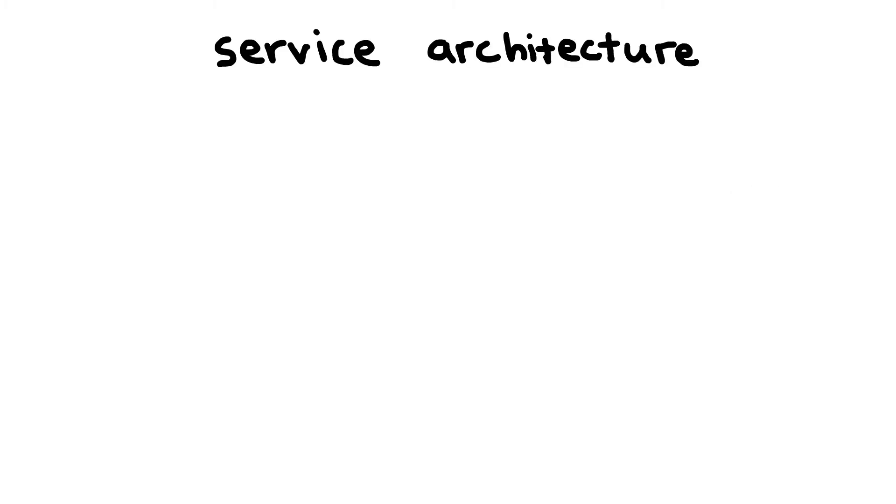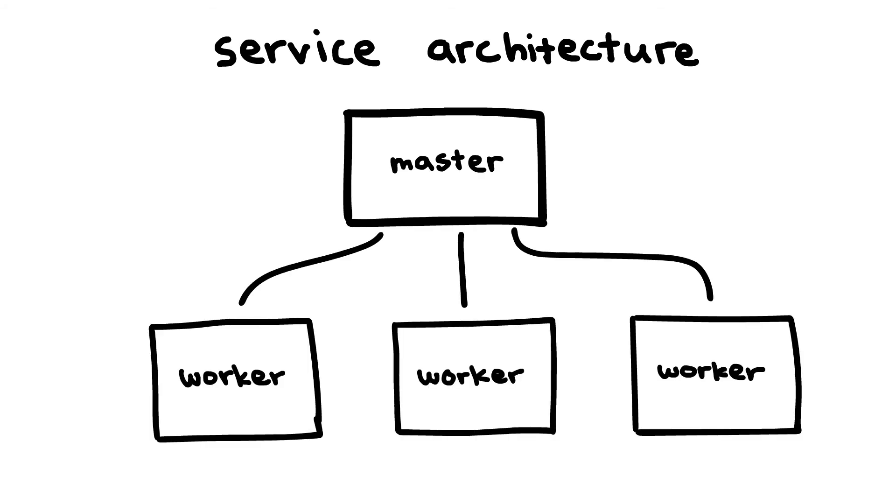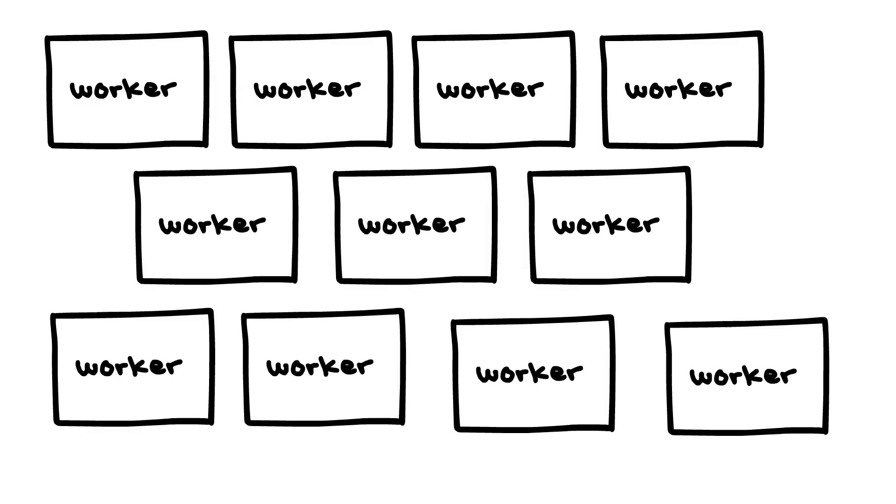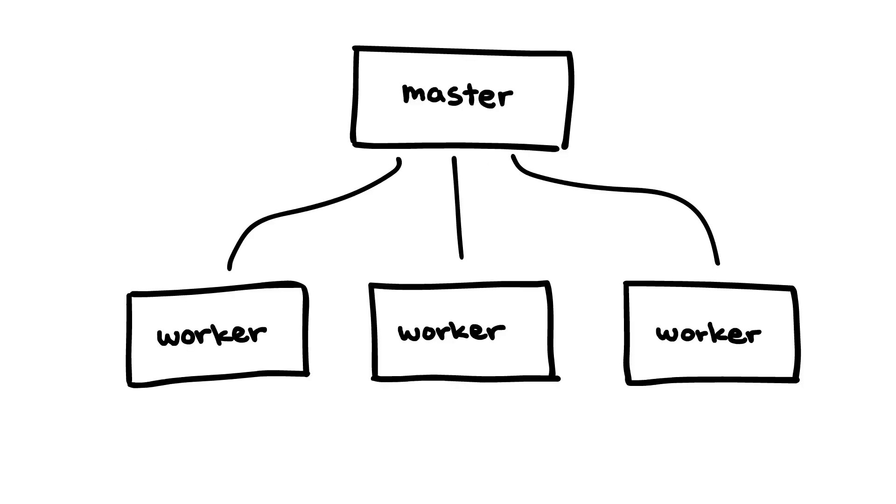Thankfully, some modern service architectures start with a master program and spawn worker programs for every request. When a worker program is spawned on Linux, it uses fork, which is a Linux system call that clones the current program. Our big break is that this cloned worker program uses the same stack canary as the master program, meaning that all the workers use the same stack canary. Thus, we get essentially as many tries as we want for programs that use this master worker architecture.